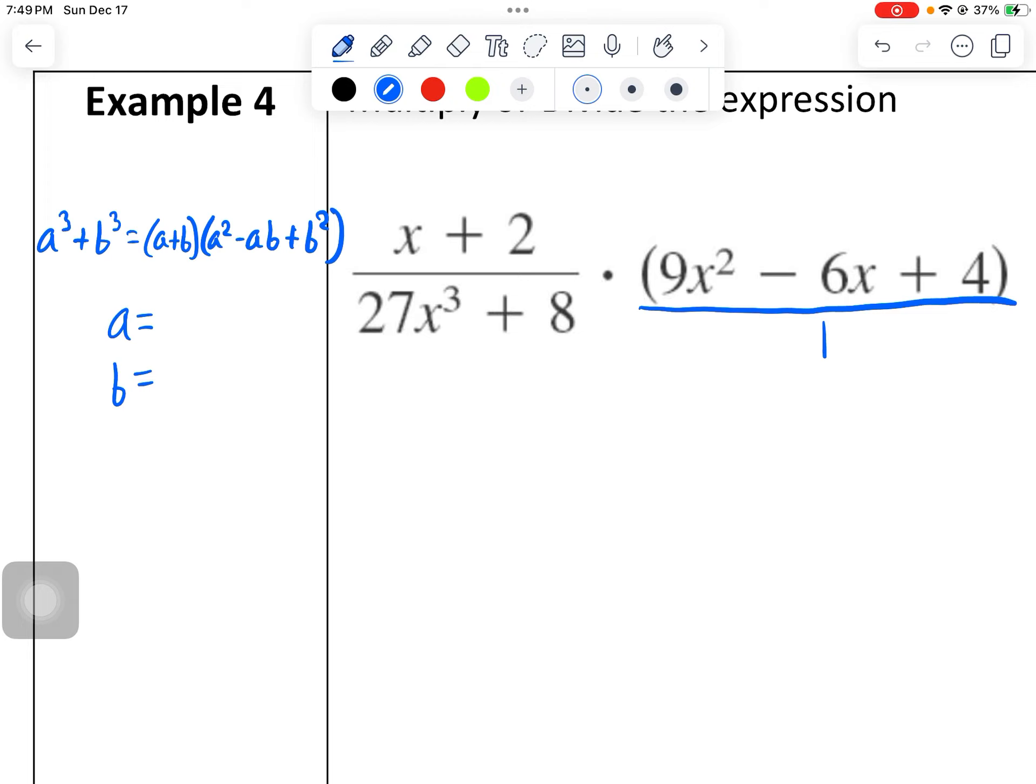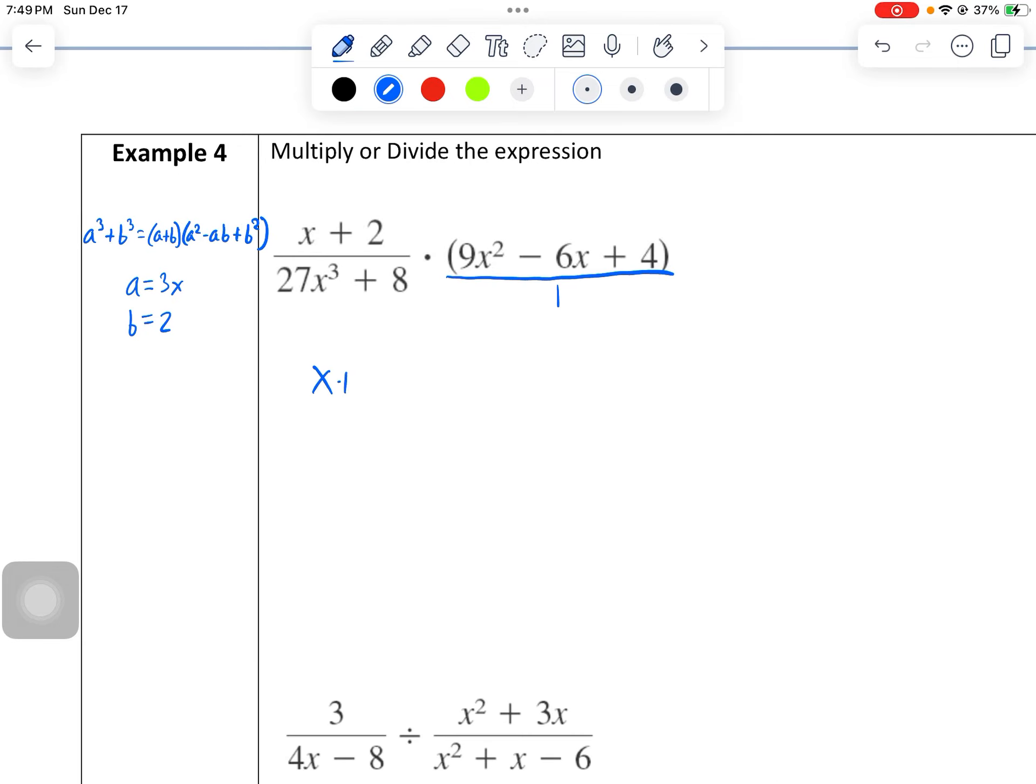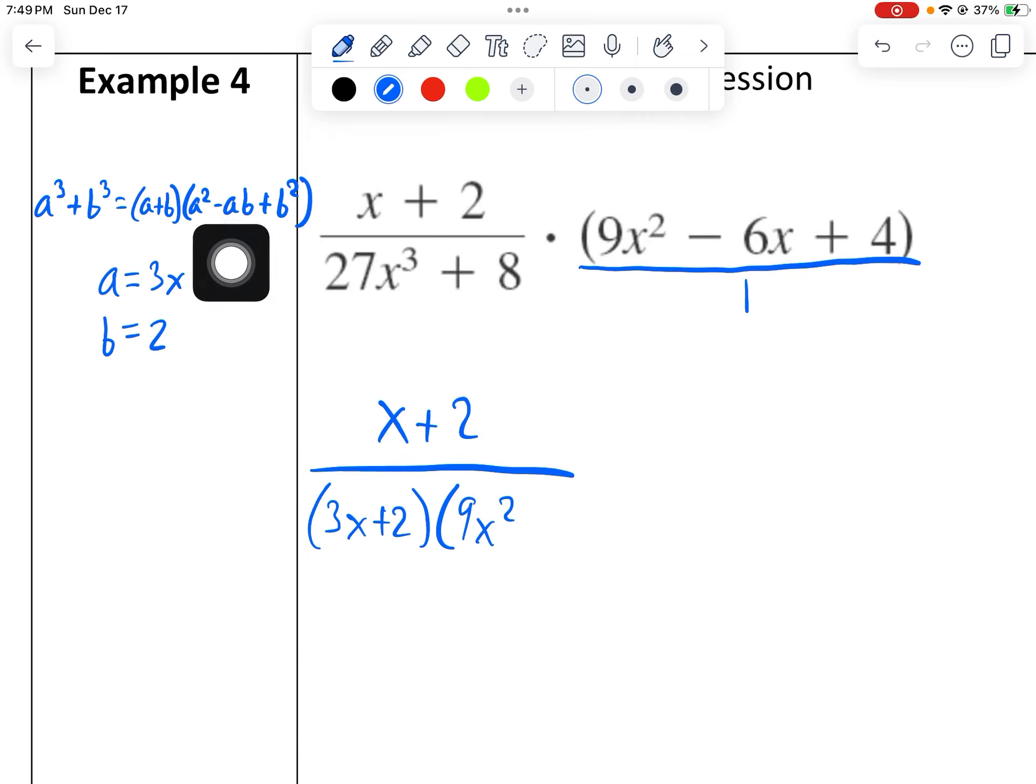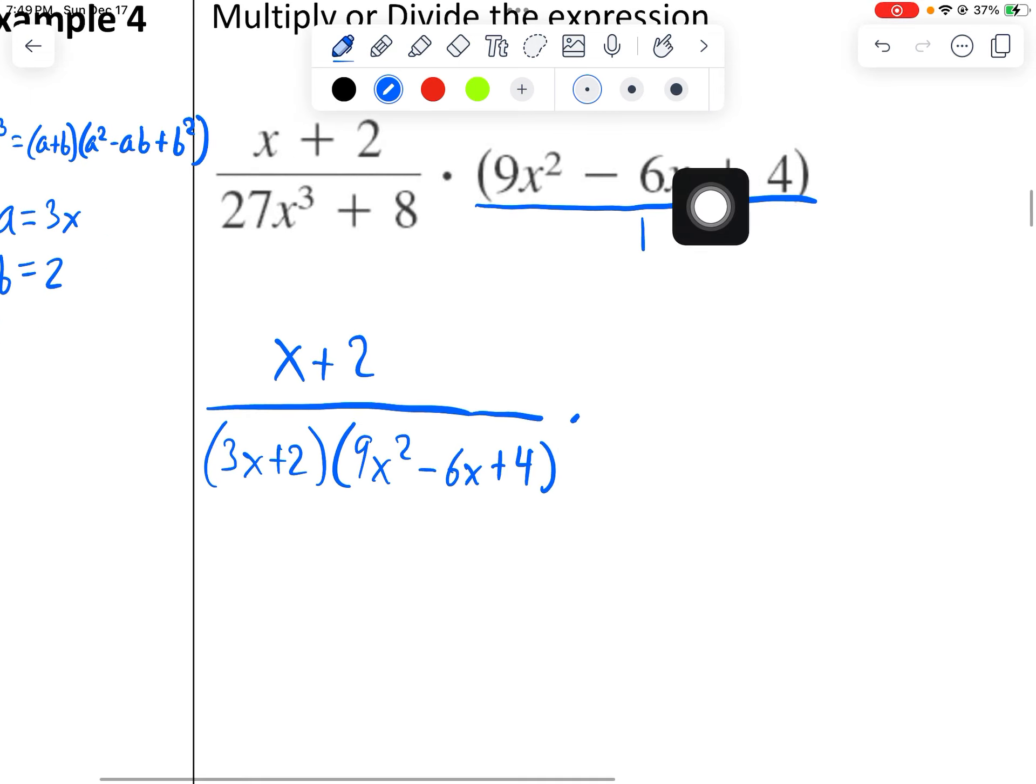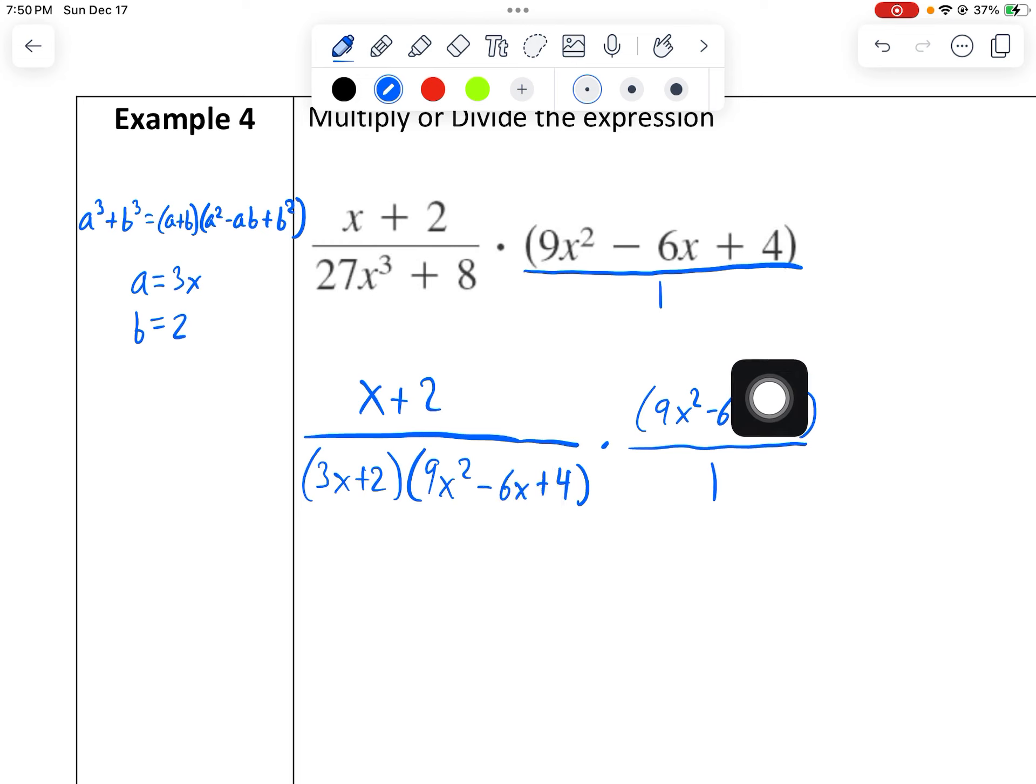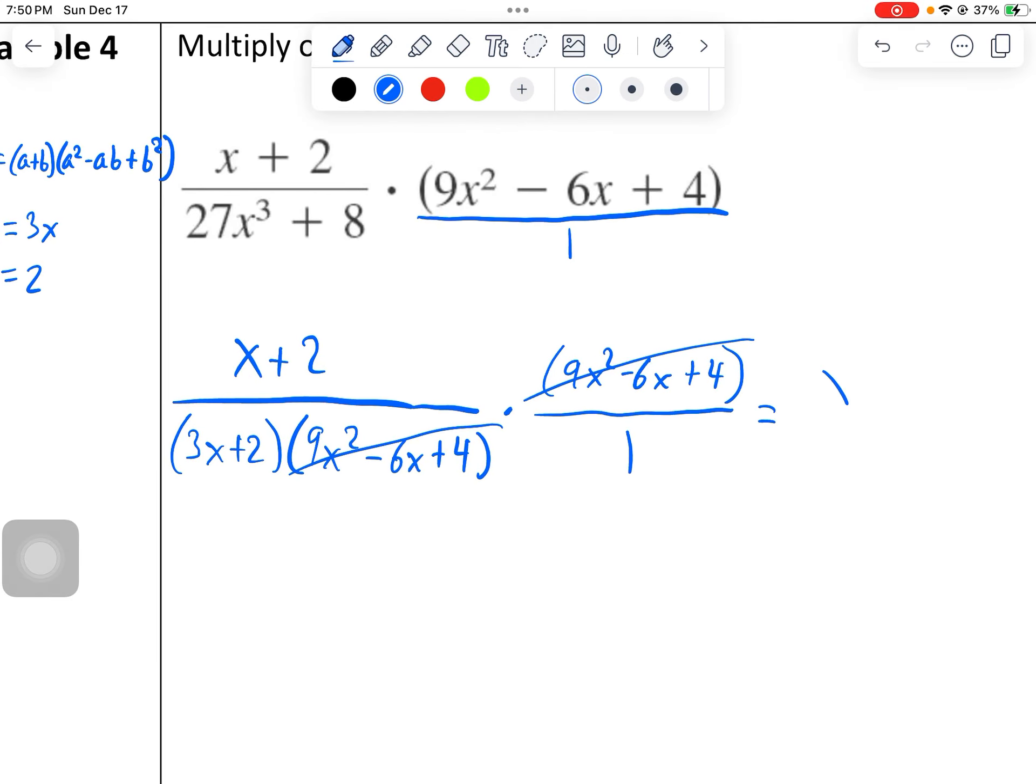When we see 27 and 8, so 27x cubed comes from 3x, 8 comes from 2. So then this is going to become, I'm going to keep the x plus 2 on the top, but the bottom is going to be 3x plus 2 times 9x squared, because I have to square the 3, minus 6x plus 4. And this problem was specifically designed because if we look at the other part here, 9x squared minus 6x plus 4. We could have tried to factor that and we would have failed because it's not factorable. But since we see that we're going to have one on the bottom, one on the top, we can just do that cross simplification and cross those out ahead of time. That's our final answer right there.